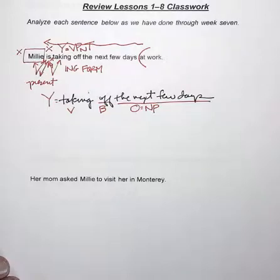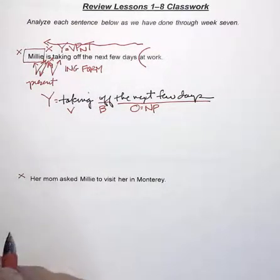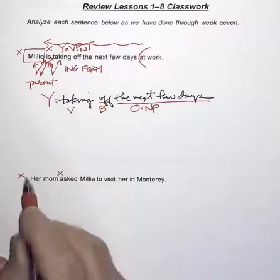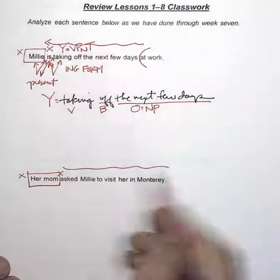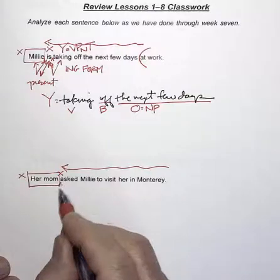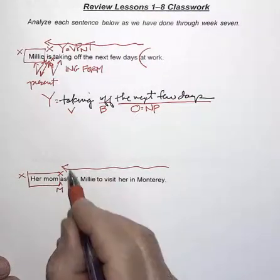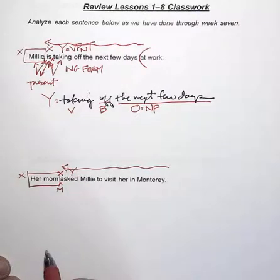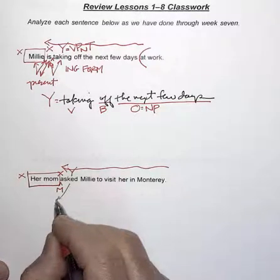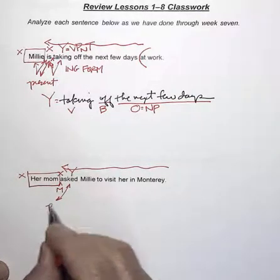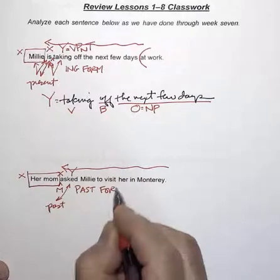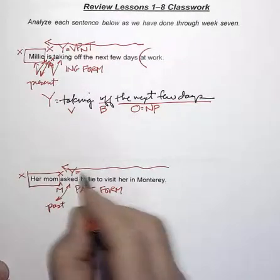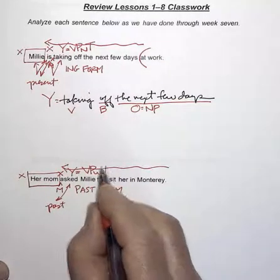Her mom asked Millie to visit her in Monterey. Did her mom ask Millie to visit? Her mom did not ask Millie to visit. Her mom is the subject. Everything left is the predicate. The M place follows X — it's empty. And asked Millie to visit her in Monterey is Y. Asked ties with the past — it's the past form. Y is a verb phrase with time.